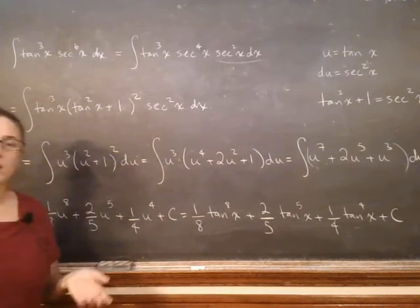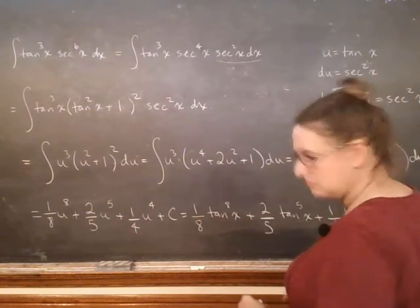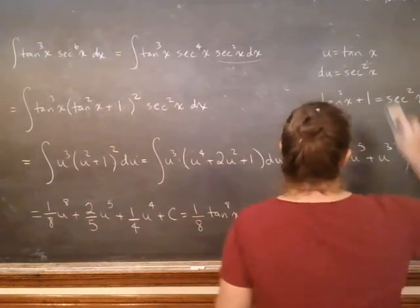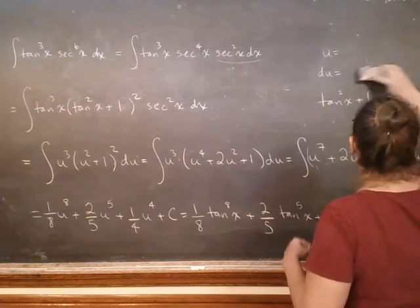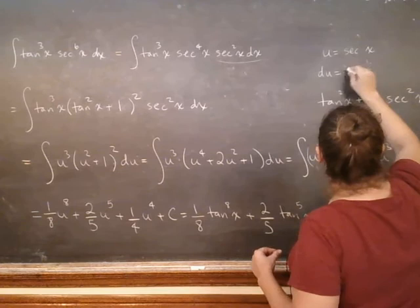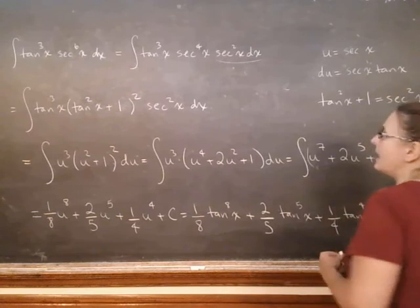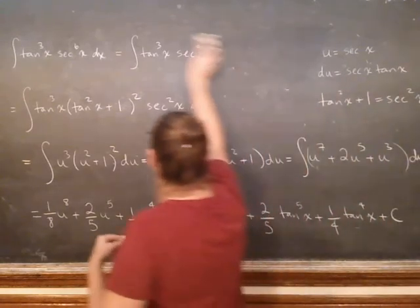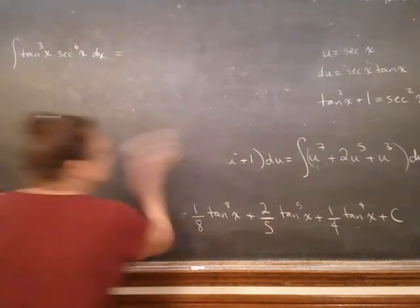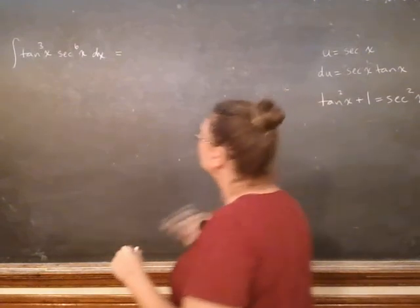So the point also of doing this example was, as I said, we can do it the other way as well. In other words, instead of making the substitution u equals tangent of x, we can make the substitution u equals secant of x, and then du is secant x tangent x. So let's go ahead and erase this bit and do it the other way and see what happens.